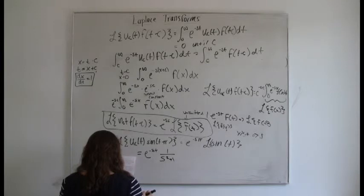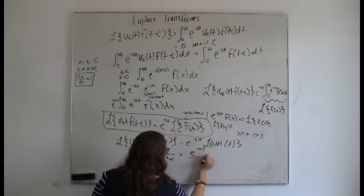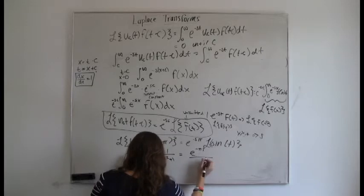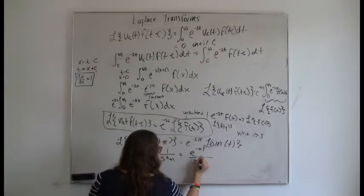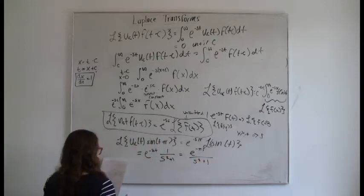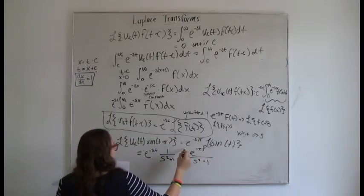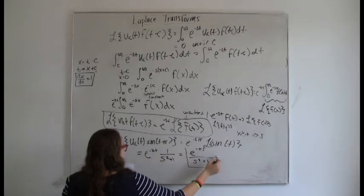So the answer is e to the minus πs over s squared plus 1 — depending on how you prefer to write it. And that is the Laplace transform of the shifted sine function.